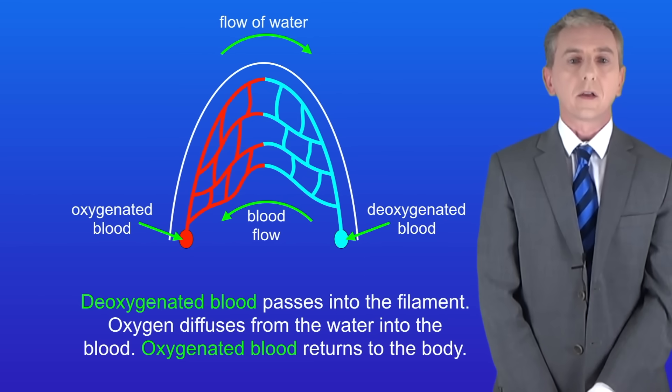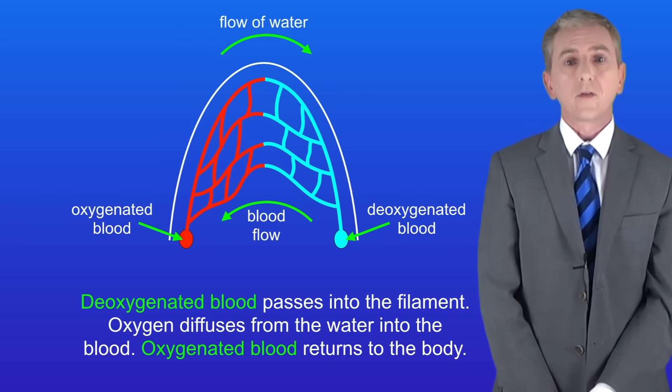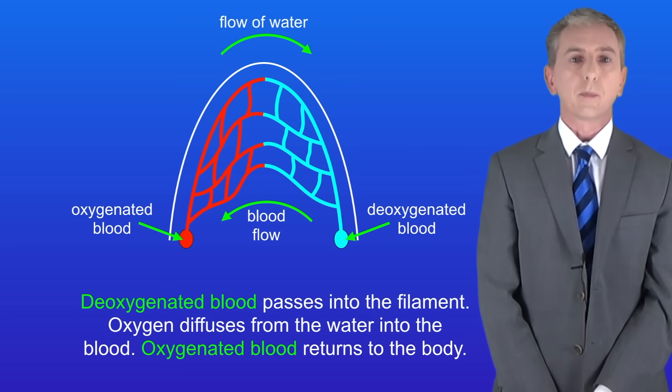Deoxygenated blood passes into the filament. Oxygen diffuses from the water into the blood and then the oxygenated blood returns to the body.